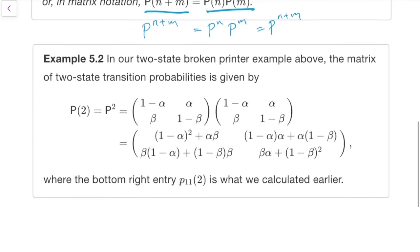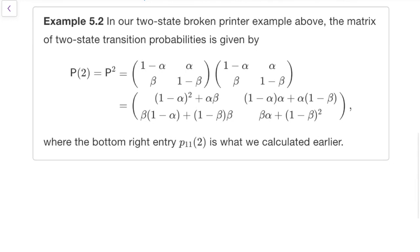So finally, let's go back to the two-state broken printer question from subsection 5.2. So we worked out a two-step transition probability by hand by summing over all the paths from 1 to 1 of length 2. But we could have found all the two-step transition probabilities at once by taking the transition matrix, which you might remember was that, and multiplying it by itself.